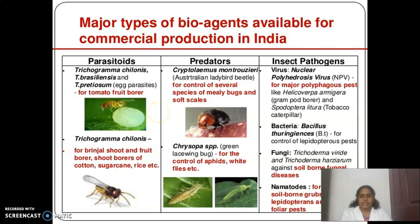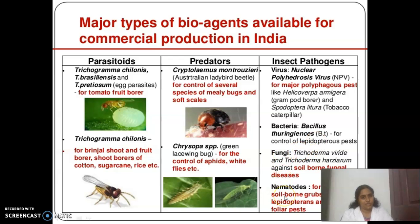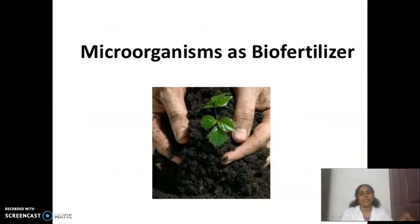A table shows the major types of bioagents available for commercial production in India in three categories: parasitoids — including Trichoderma species; predators — including Cryptolaemus and Chrysopa species; and insect pathogens — including Nucleopolyhedrovirus, Bacillus thuringiensis (Bt), fungi, and some nematodes. We can use different types of organisms as biocontrol agents to protect our soil, water bodies, and living organisms.